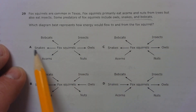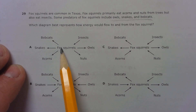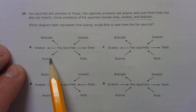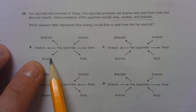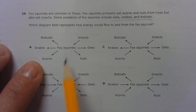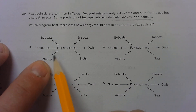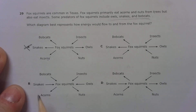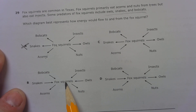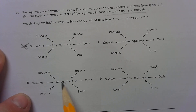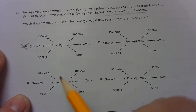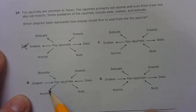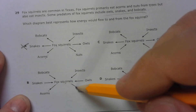Option A shows the energy going from the fox squirrel to the acorns. That doesn't make sense — the acorns aren't getting their energy from the fox squirrels, so this one would be wrong. Option B has the same situation: it shows the energy going from the fox squirrels into the acorns, making it look like the acorns are eating the fox squirrels.